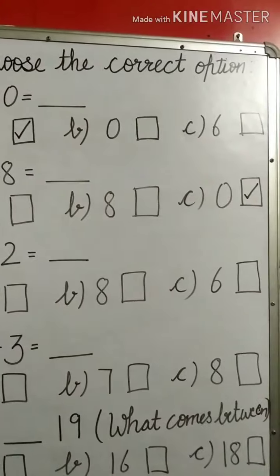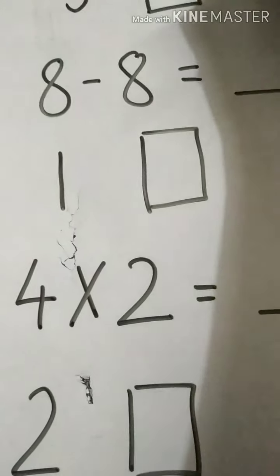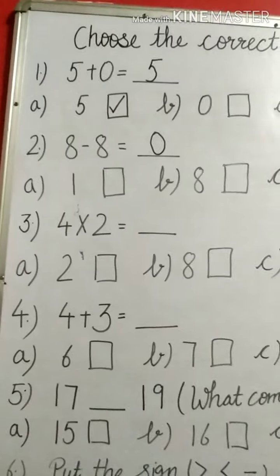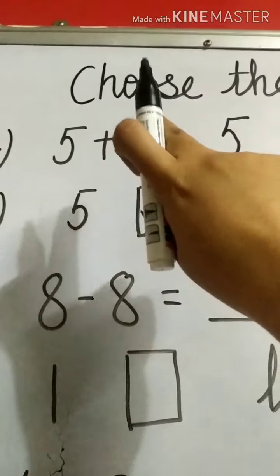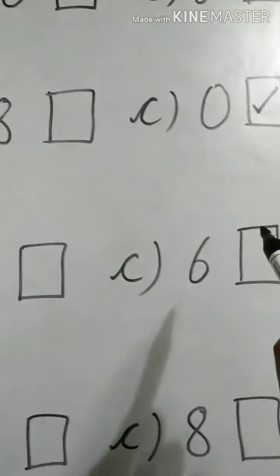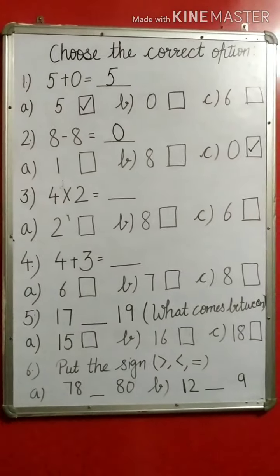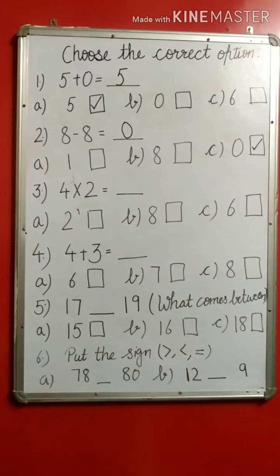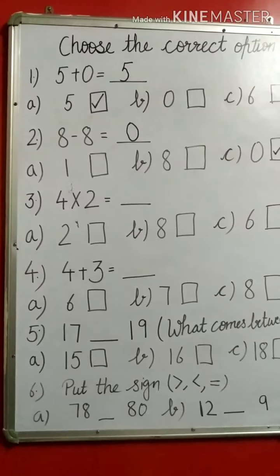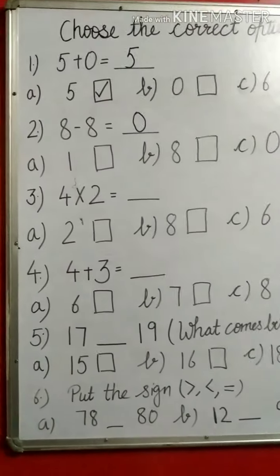I will put a tick here. You can also write the correct answer in the blanks if you want, but it is not much needed. The main thing is when choosing the correct option, you need to put the tick against the correct option. So we have done two questions: in the first, option A is correct with answer 5; in the second, 8 minus 8, option C is correct with answer 0.